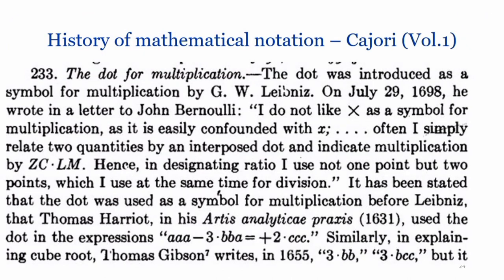Florian Cajori notes that on July 29, 1698, Leibniz wrote a letter to Johan Bernoulli saying: 'I do not like the cross as a symbol for multiplication as it is easily confounded with x. Often I simply relate two quantities by an interposed dot.' It has also been stated that the dot was used as a symbol for multiplication before Leibniz — Thomas Harriot used the dot in earlier expressions.